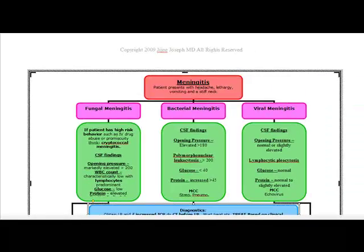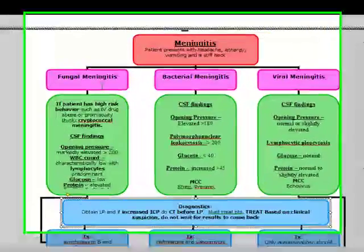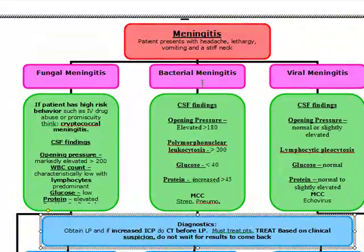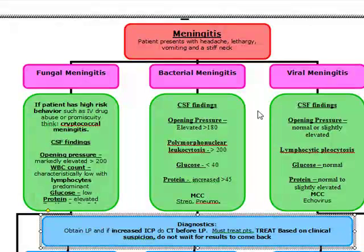Meningitis is going to be broken down into three different types: fungal meningitis, bacterial meningitis, and viral meningitis. The first thing I want you to look for is the glucose. If the glucose is normal, viral meningitis is your cause.